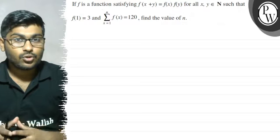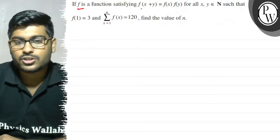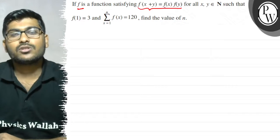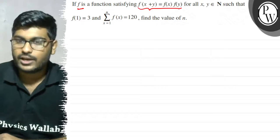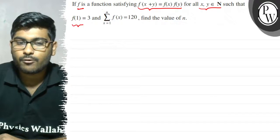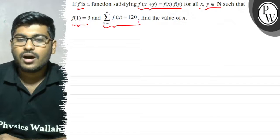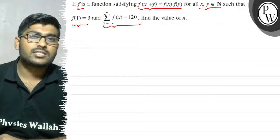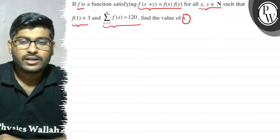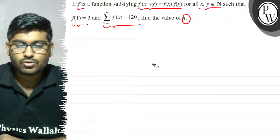Hello, let's see this question. The question says that if f is a function satisfying f(x+y) = f(x)·f(y) for all x, y belonging to natural numbers, such that f(1) = 3 and sigma f(x) for x equals 1 to n equals 120, find the value of n. So we will find the value of n in this question.